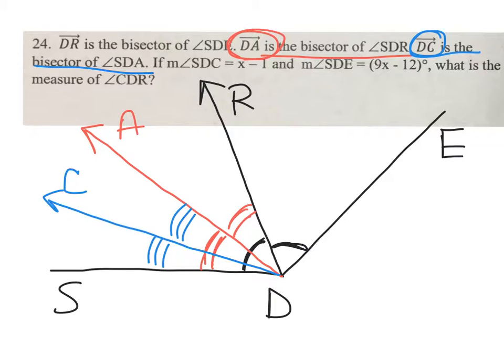So it looks like that's all the drawing that we have to do. Now we have some algebraic things to put in here. Angle SDC is said to be x minus one, and the whole entire angle...